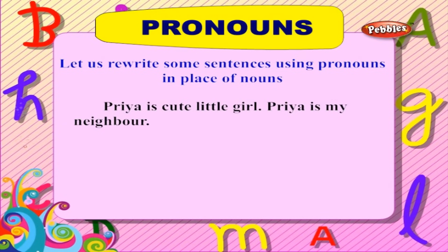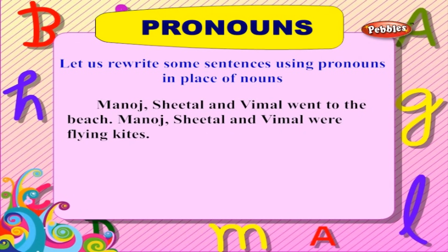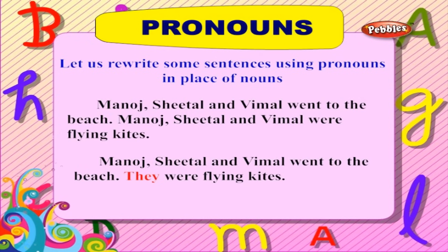'Priya is a cute little girl. Priya is my neighbor.' Let us rewrite: 'Priya is a cute little girl. She is my neighbor.' The noun Priya is replaced with 'she'. 'Manoj, Sheetal and Vimal went to the beach. Manoj, Sheetal and Vimal were flying kites.' Rewritten: 'Manoj, Sheetal and Vimal went to the beach. They were flying kites.' The nouns Manoj, Sheetal, and Vimal are replaced with the pronoun 'they'.